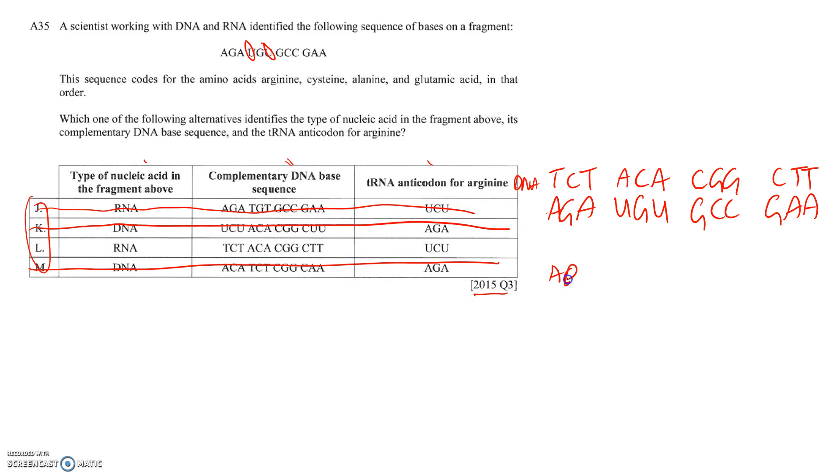Just to confirm what we have here: arginine, cysteine, alanine and glutamic acid, those are the amino acids. If this is the mRNA, this is where our tRNA anticodons will go in between and this is where our amino acids sit.